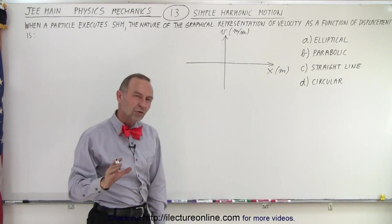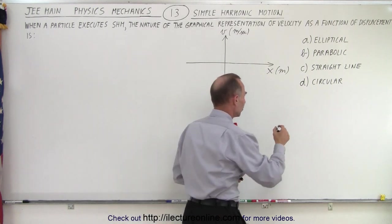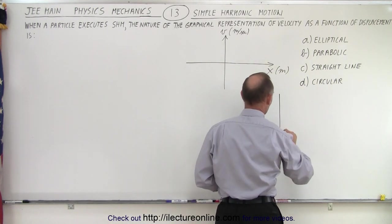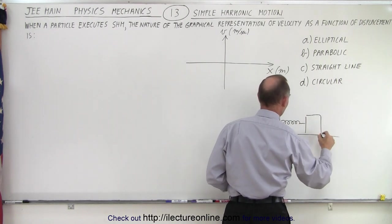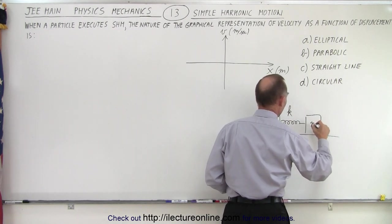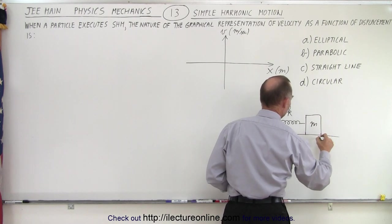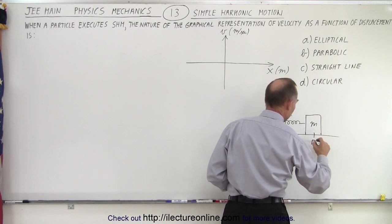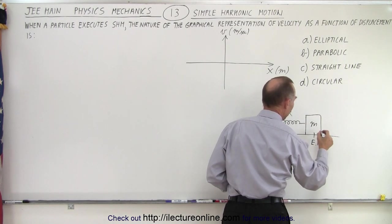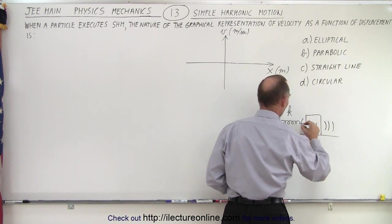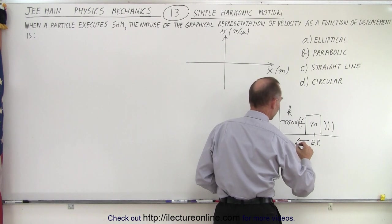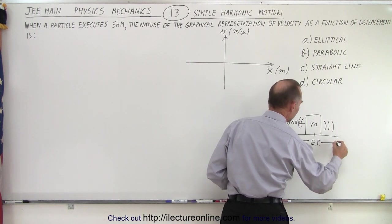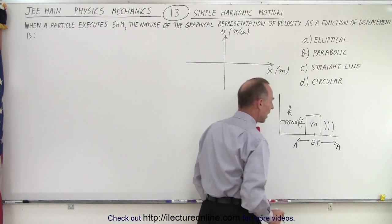Now let's draw a depiction of simple harmonic motion. So let's say we have an object that's attached to a spring of spring constant k. It has mass m, and let's say this is the equilibrium point, and it moves back and forth, which means it will go in one direction for maximum amplitude A, and in the other direction for maximum amplitude A.